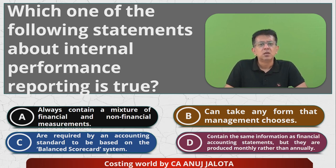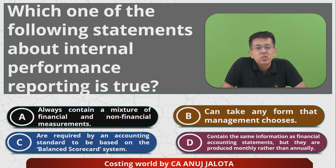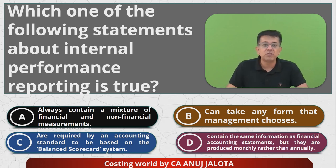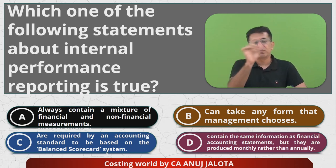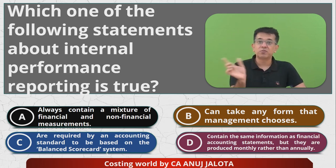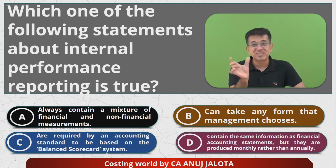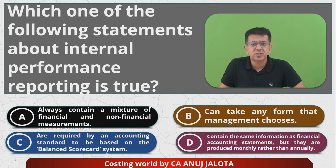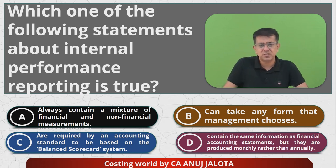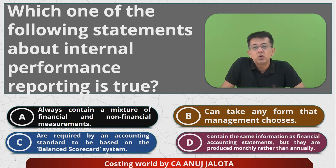Option B says it can take any form that the company chooses. Yes, of course — this is internal performance measurement, so management decides the format: what to measure, how it is calculated, what the actual figure was, and what the deviation from the standard is. The format is decided by the company itself.